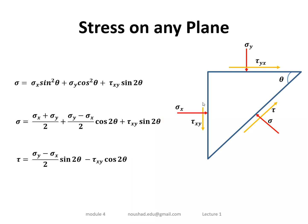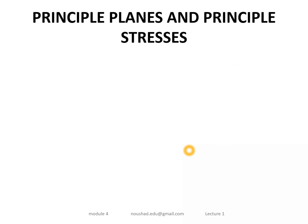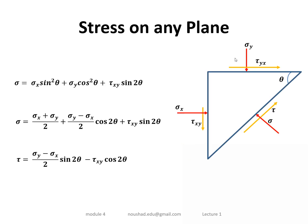Here, theta is the angle of the inclined plane measured from the horizontal plane. The vertical plane corresponds to a specific theta. We will now discuss the principal plane and principal stress. In a plane with any inclination, both sigma and tau values can be found.